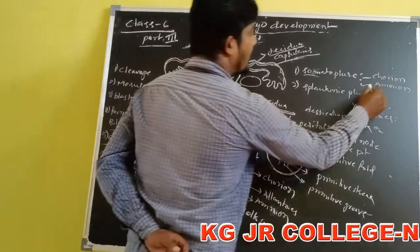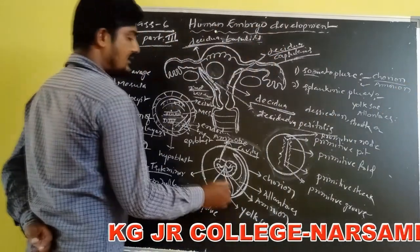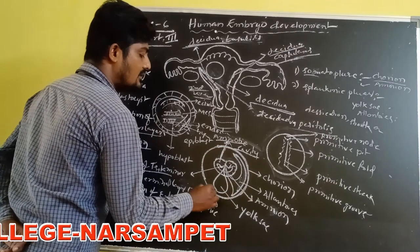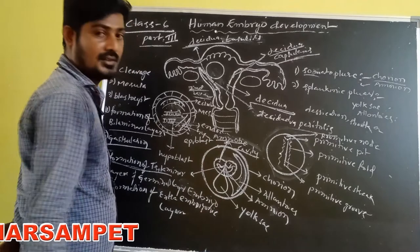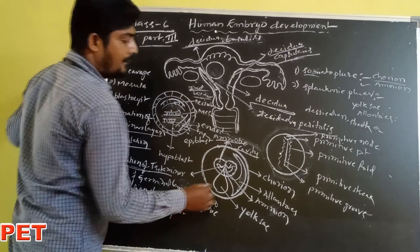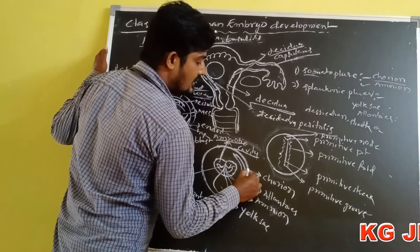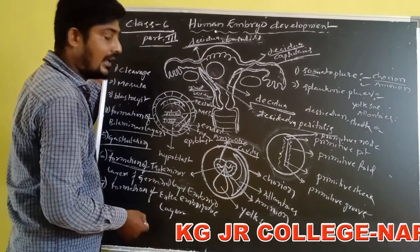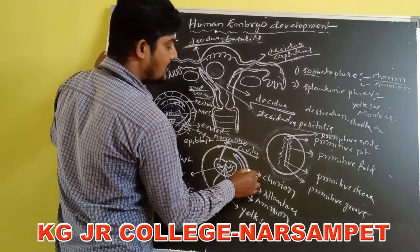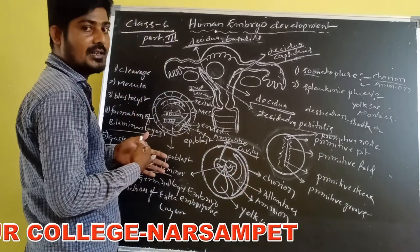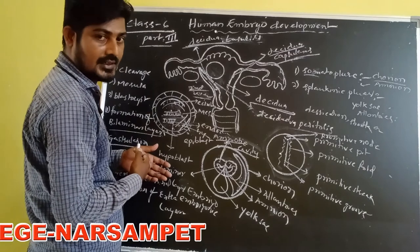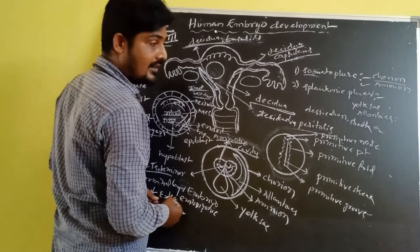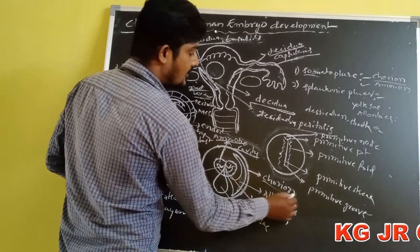Next, another one is the chorion. This is the outermost extra-embryonic membrane. The chorion has rich blood vessels and is associated with the mother's blood circulation. Finally, it forms the placenta.